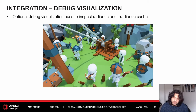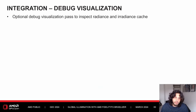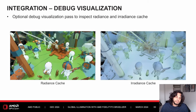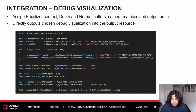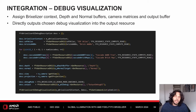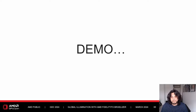There is also an optional debug visualization mode to inspect the world space radiance and irradiance caches. Similar to the update dispatch, you assign the Brixelizer context, depth buffer, G-buffer normals, camera matrices, and an output resource. You choose what debug mode to use — either radiance cache or irradiance cache — and the dispatch directly outputs the chosen information into the given output resource.